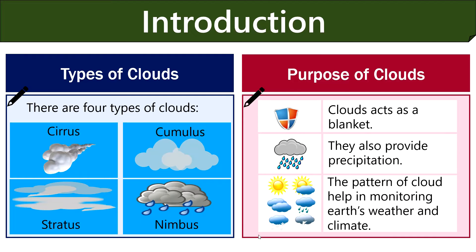Now coming to the purpose of clouds, let's discuss why they are important. First, clouds function as protective shields — in the daytime they protect us from the sun's heat and redistribute extra heat from the equator towards the poles. Clouds also produce rainfall that is necessary to replenish water to the earth, because without precipitation there would be dryness all over. The pattern of clouds helps in forecasting weather and climatic changes and also helps in modelling the impact of these changes in the future.